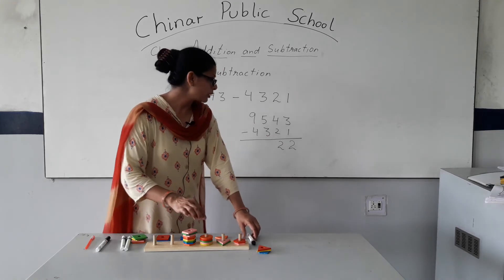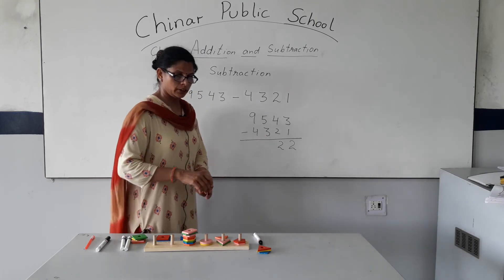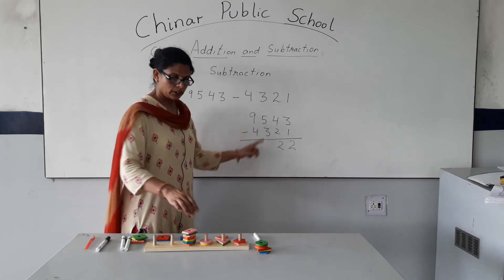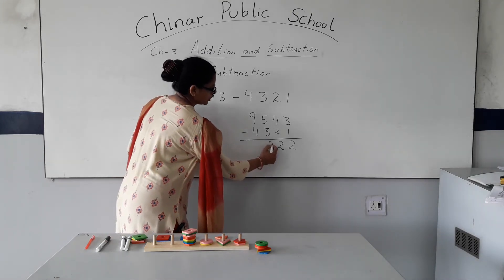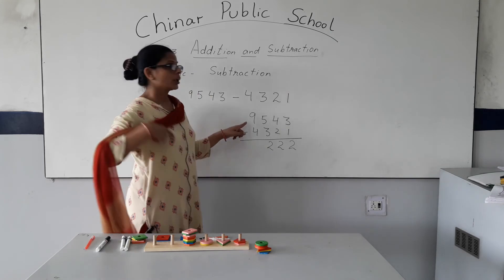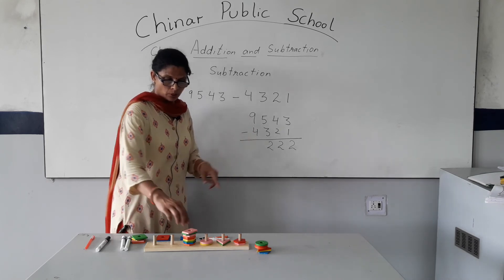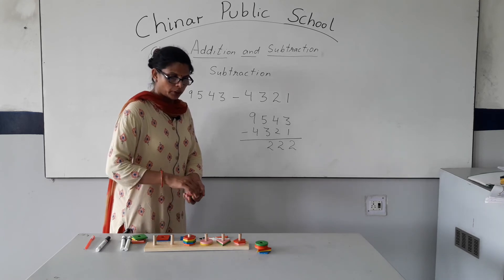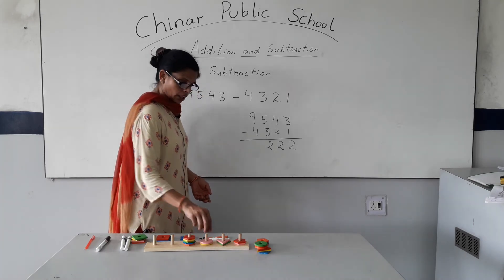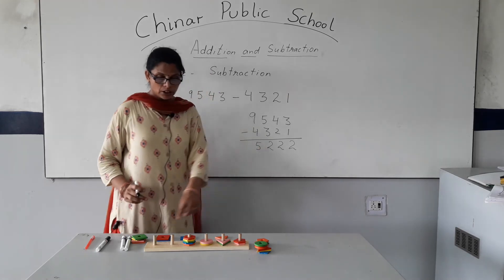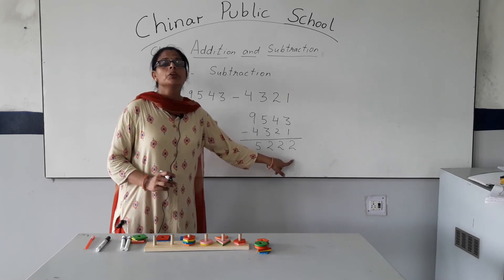Next, on the hundreds place, we take out three — one, two, three. I have taken out three from five circles, so how many are left? Two. Five minus three is two. On the thousands place, there is four to subtract from nine — one, two, three, four. I have taken out four, so how many are left? One, two, three, four, five. Five are left. So the answer of the subtraction is 5222.